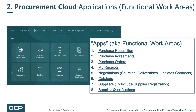Next up, Procurement Cloud Applications. What you see here is a wide open view of the eight different applications under Procurement Cloud. In the upper left of the image you'll see 'apps,' because they're referred to in some places as apps or applications. However, in some documentation as well as in some of the training, they're referred to as functional work areas — so something like suppliers may not be an application per se. Within Procurement Cloud there are: purchase requisitions, purchase agreements, purchase orders, my receipts, negotiations (which includes sourcing and deliverables functionality and allows you to initiate contracts), catalogs (which includes supplier registration, both internal and external), and lastly, supplier qualifications.